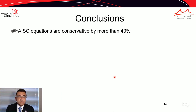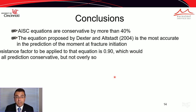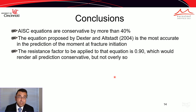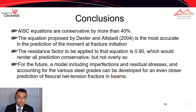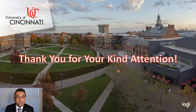In conclusion, the AISC equations are conservative by more than 40%, as shown in the literature. The equation proposed by Dexter and Alstad in 2004 is by far the most accurate in predicting the moment at fracture initiation, and applying a resistance factor of 0.9 would render all predictions conservative but not overly so. For future work, we plan to build models including imperfections and residual stresses and accounting for various steel grades to get even closer predictions — though there is no substitute for actual experimental tests. Thank you very much.